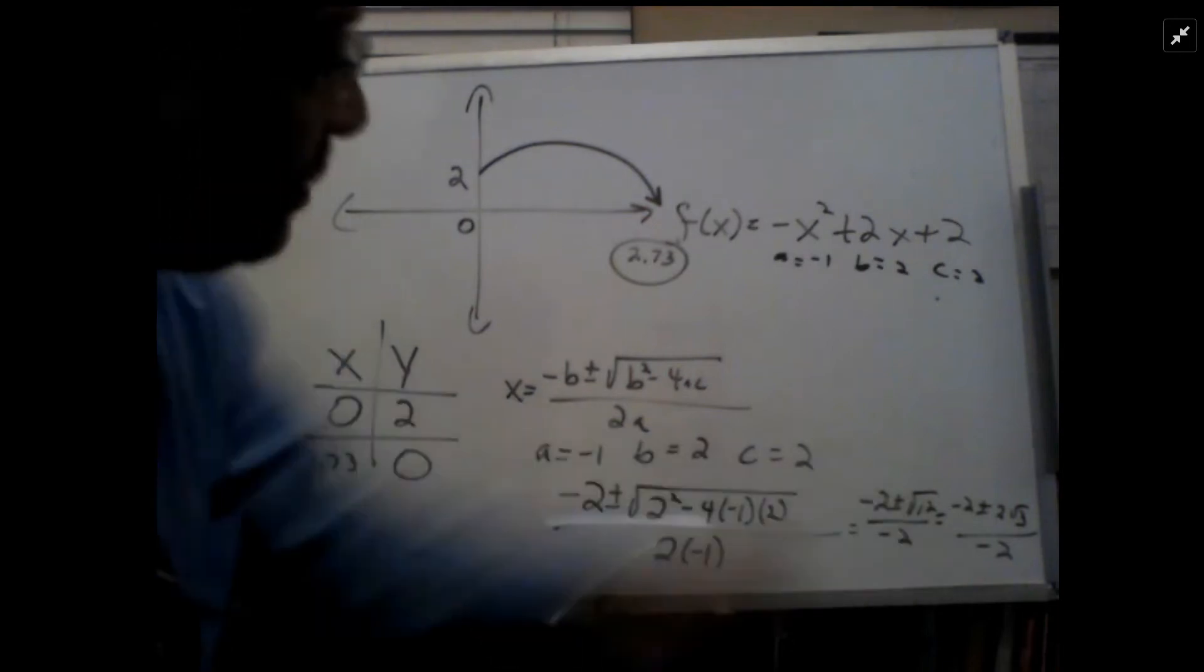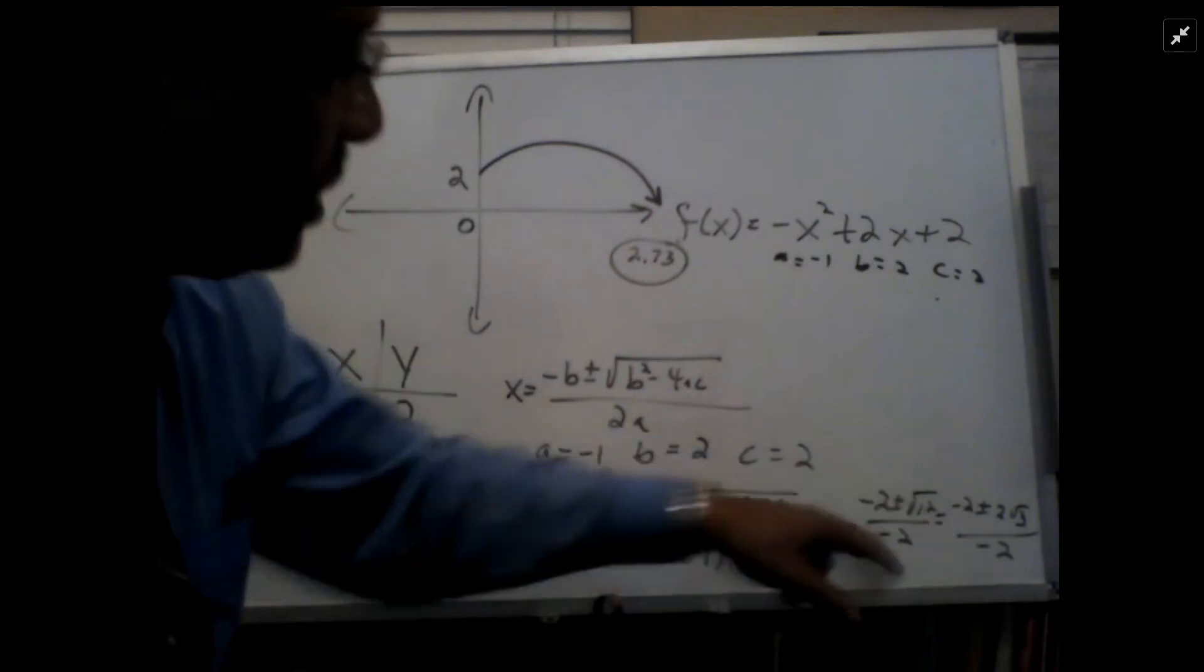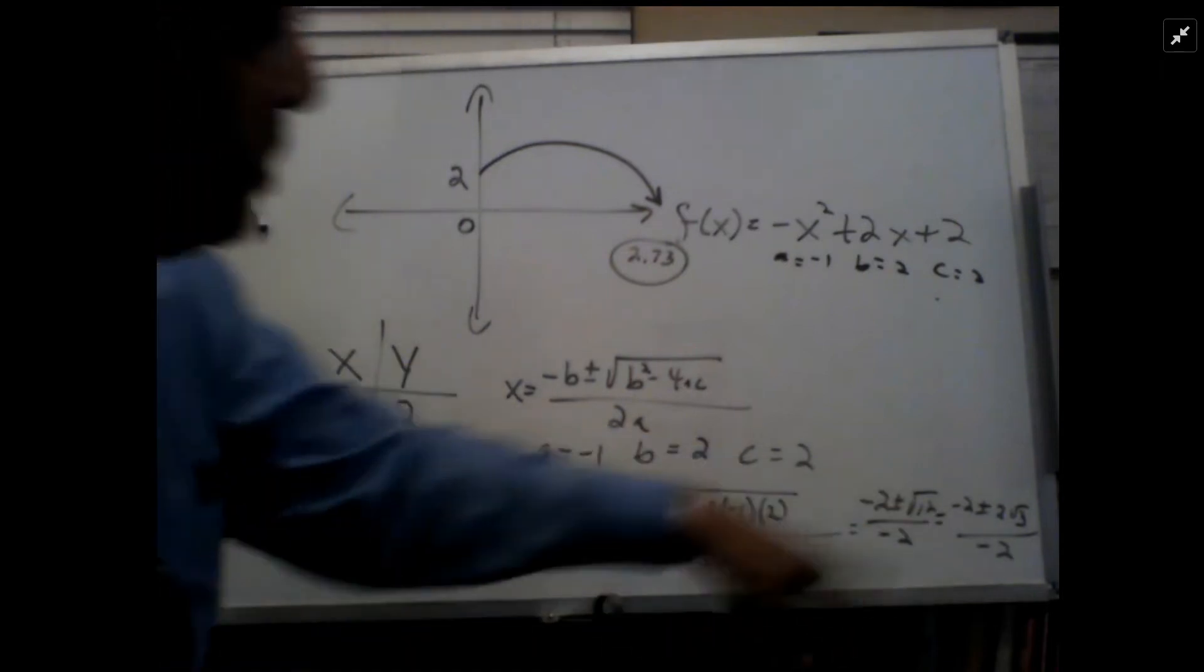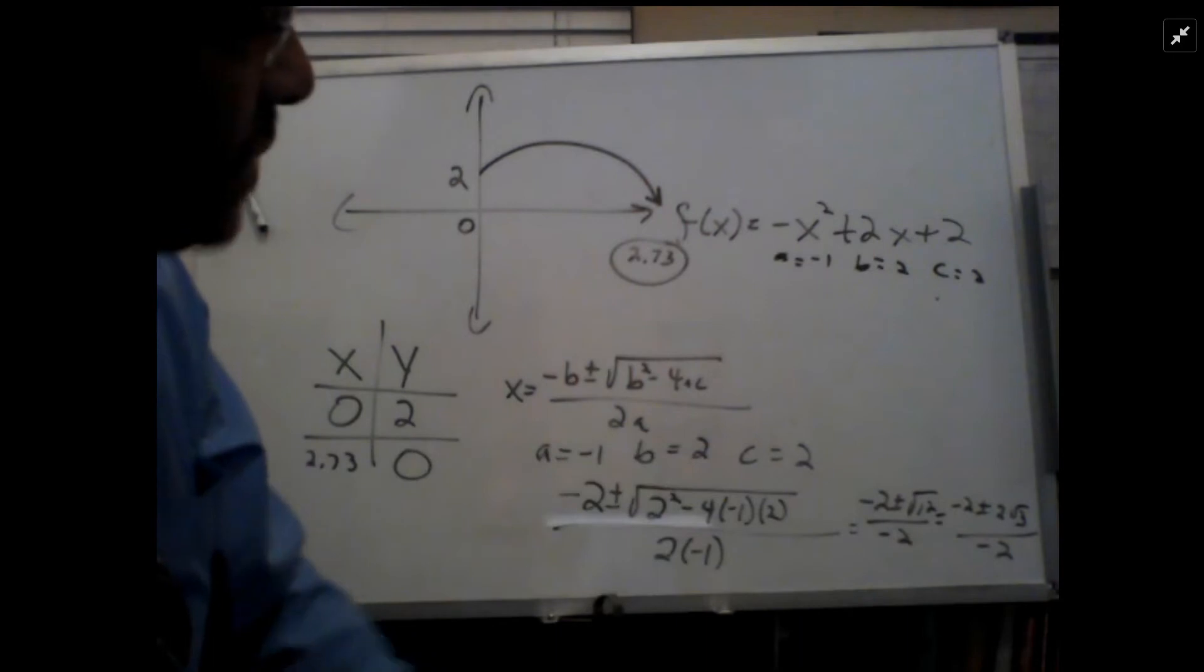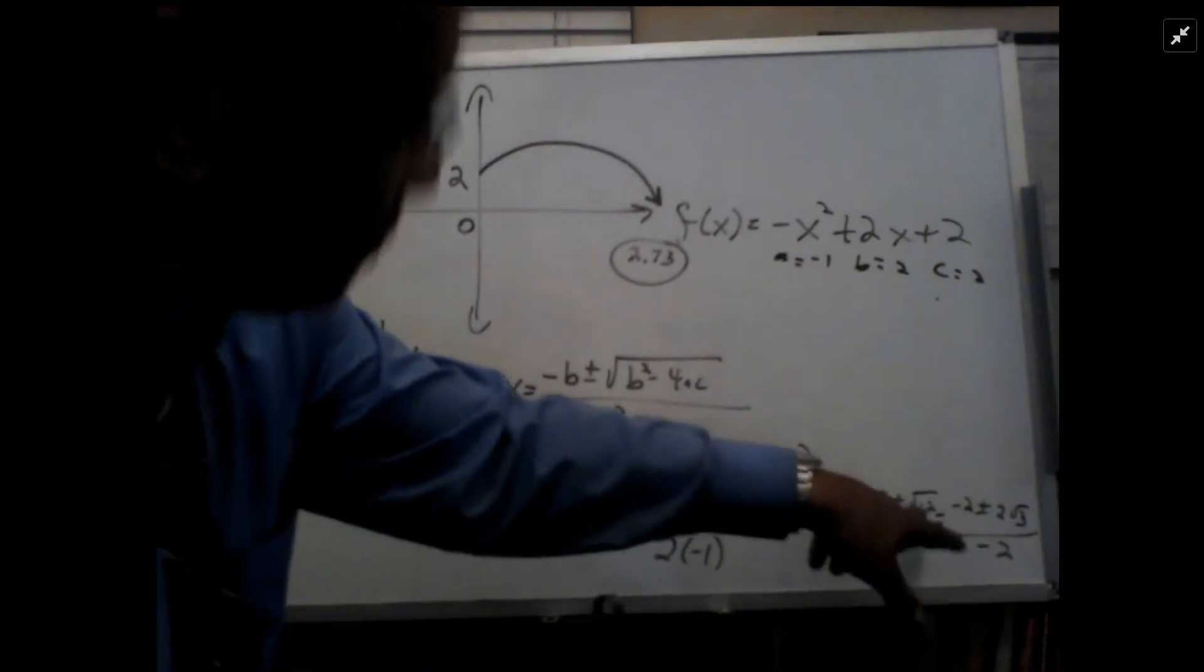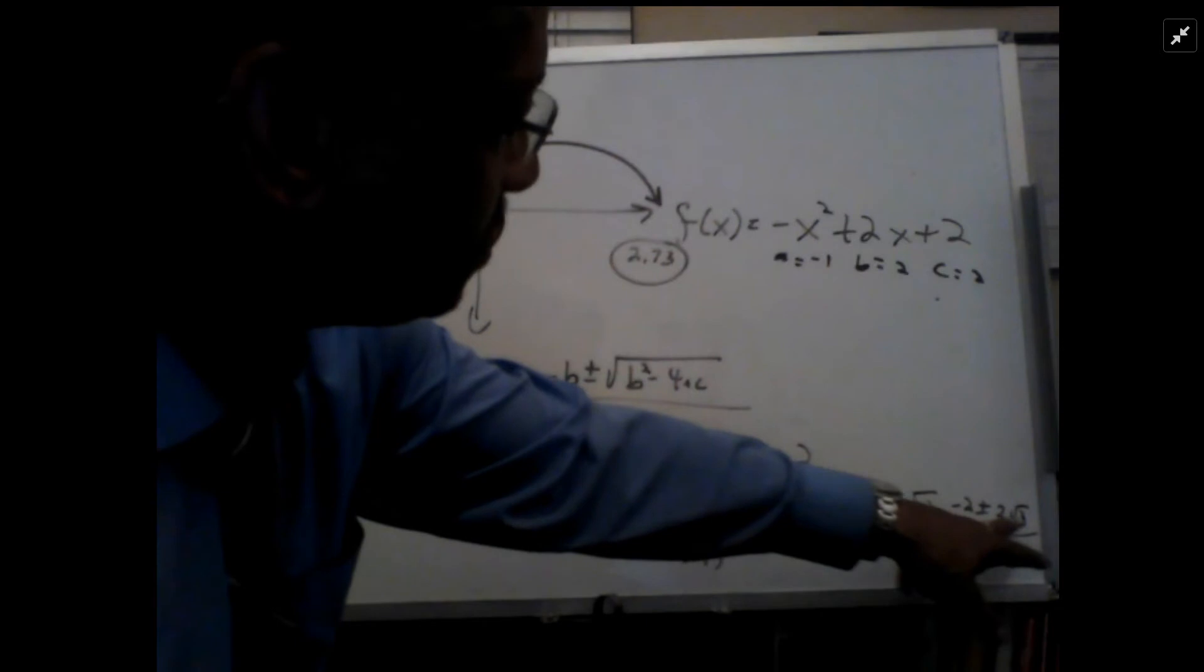So negative 2 plus or minus the radical 12 over negative 2. Radical 12, since 4 times 3 is 12, radical 12 is 2 radical 3.